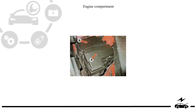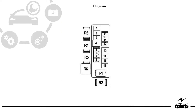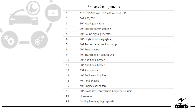Engine compartment fuse box. Photo, Type 1. Diagram. Protected components.